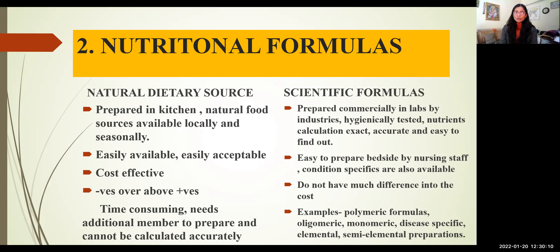Let's look at various nutritional formulas available. The first type is natural dietary sources, which are prepared in the kitchen using natural food items available locally and seasonally. These are easily available, easily acceptable by patients, and cost-effective. However, the preparation process is time-consuming, requires an additional person to prepare these formulas, and the nutritional calculation cannot be accurately determined.